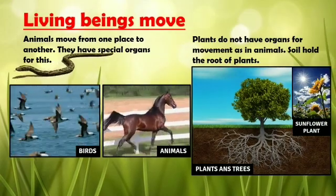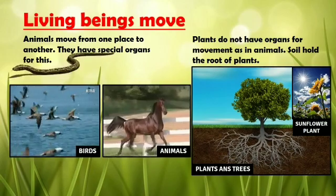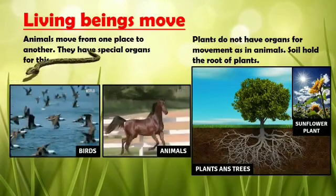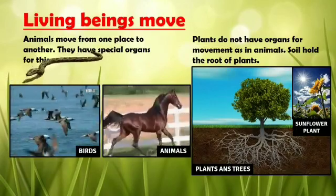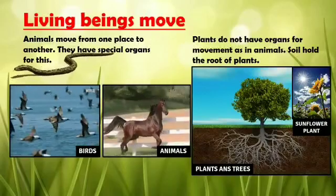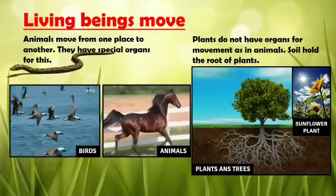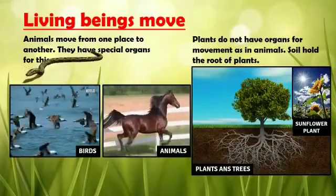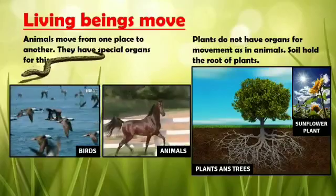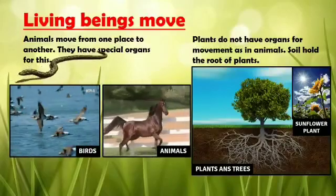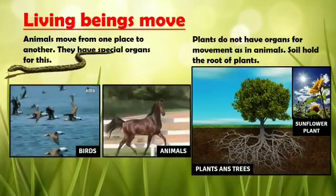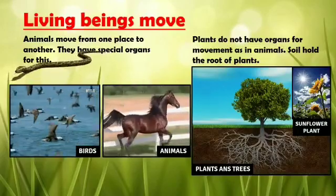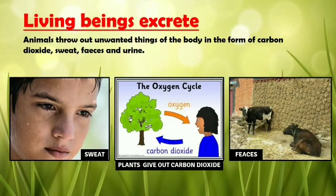Living beings move. Animals move from one place to another; they have special organs for this. Human beings move with legs, birds move using feathers, snakes move with the help of muscles and scales in their body. But plants do not have organs for movement as in animals. Soil holds the root of plants. We can observe slight movement in plants — like the roots growing towards water, and in a sunflower plant we can notice the flower turning towards the sun.